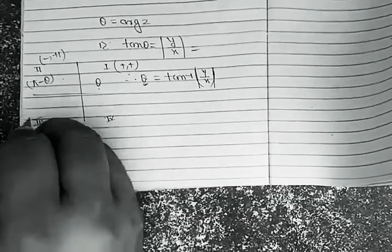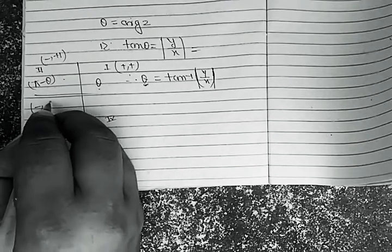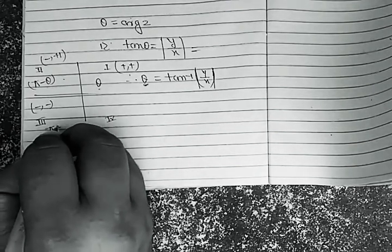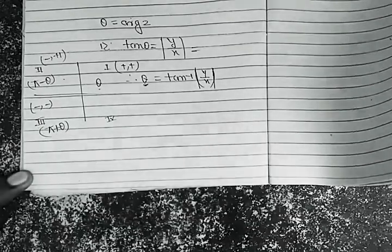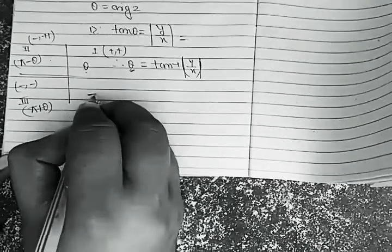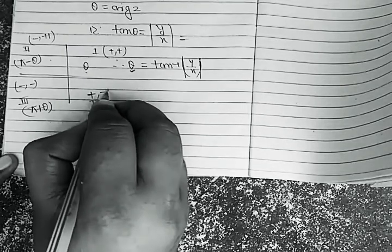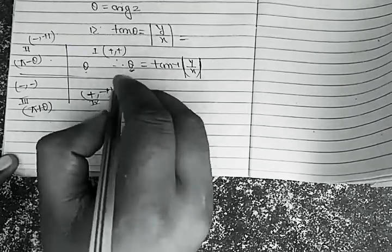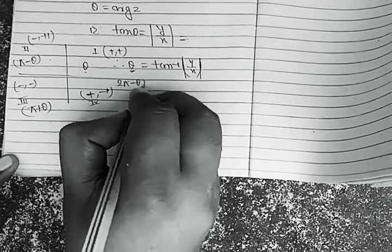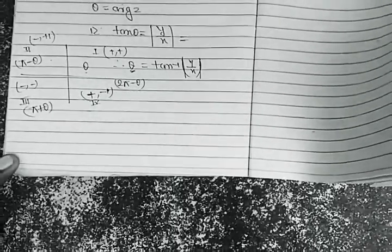If it lies in the third quadrant — meaning both x and y are negative — then the argument is π plus θ. And if it's in the fourth quadrant, meaning x is positive and y is negative, then the argument equals 2π minus θ.